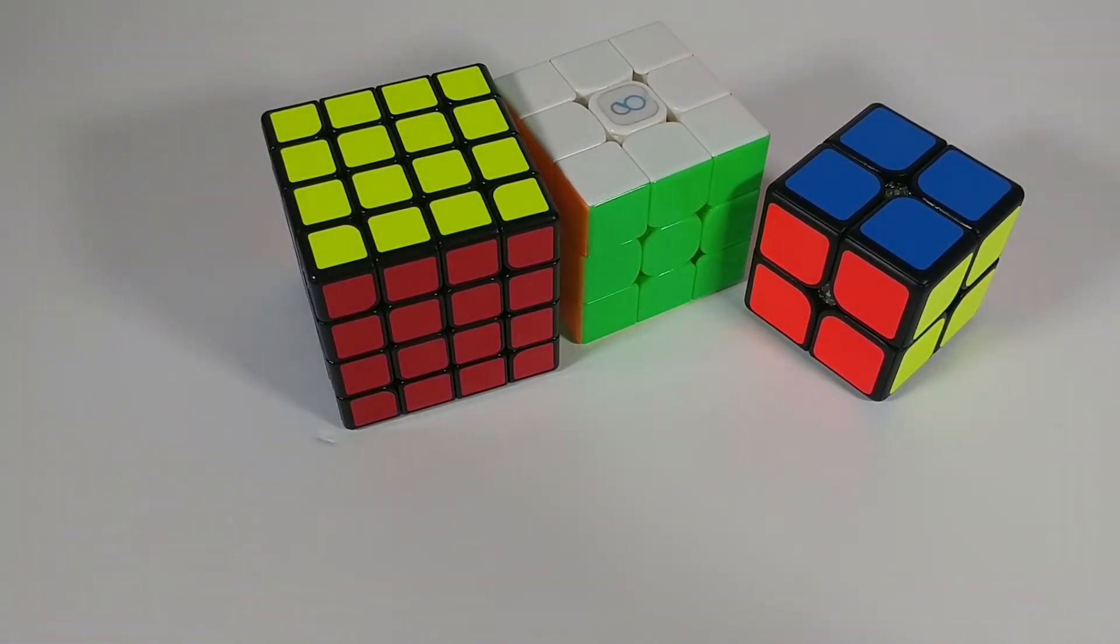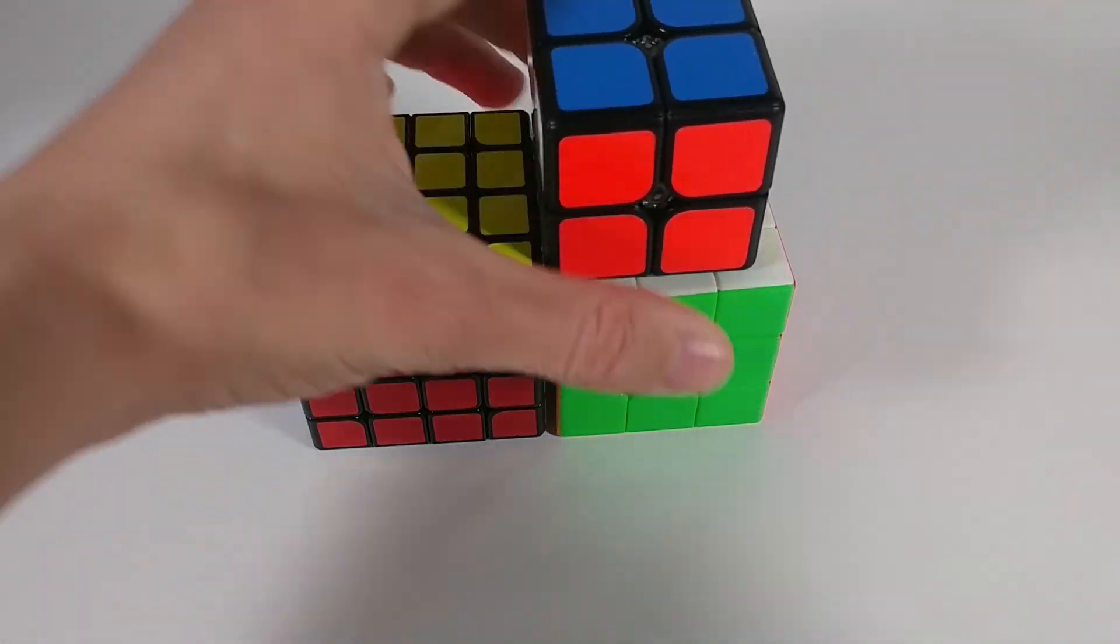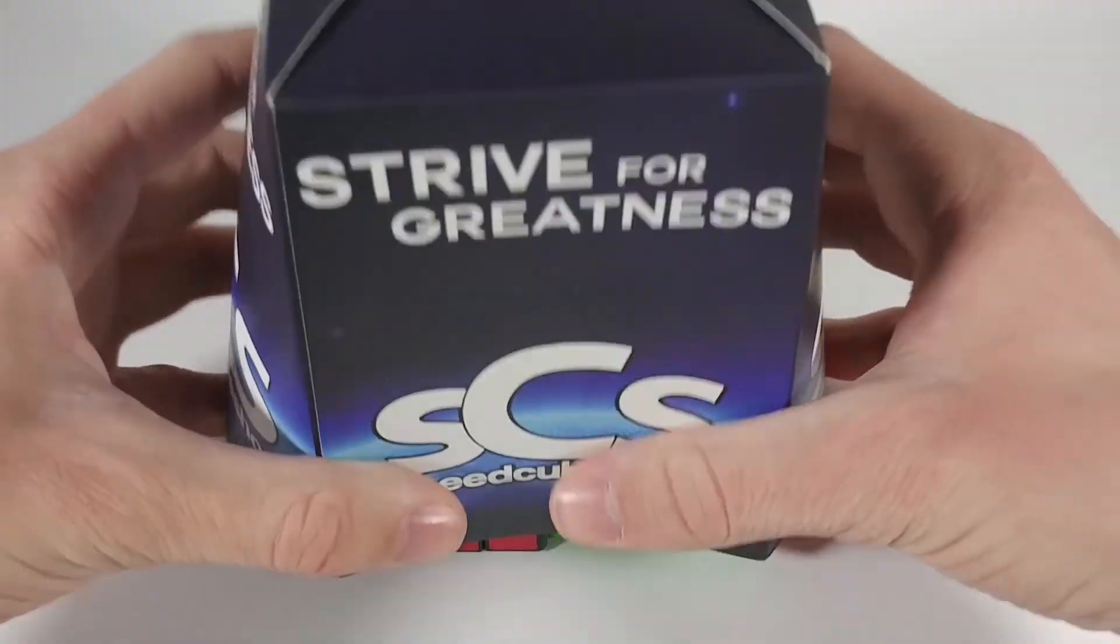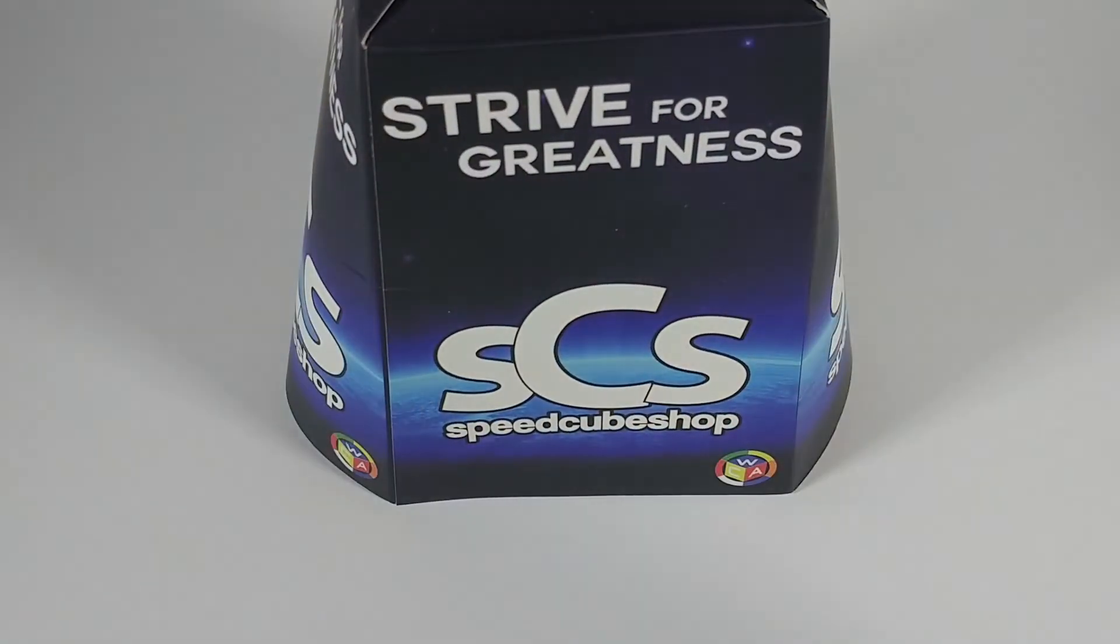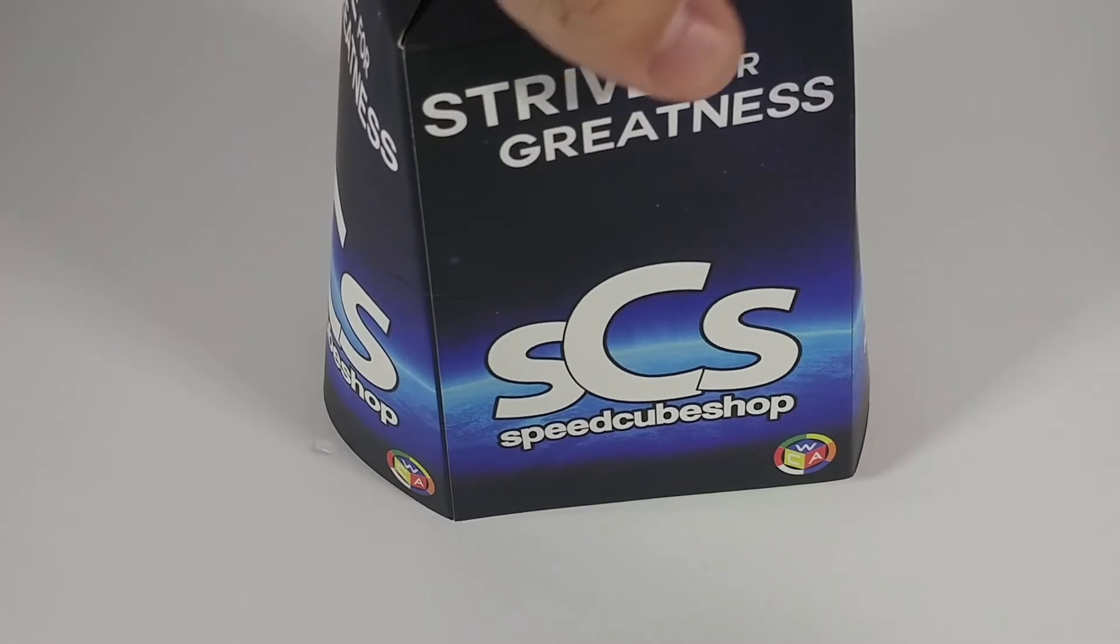Now, there are kind of only two problems. Scrambling would get kind of annoying because you'd have to do three per person. But another problem is that the cube covers we have now don't exactly fit this super well. I can kind of get it to cover all the cubes, but it's a little bit squished. It still works, but it doesn't look the greatest.